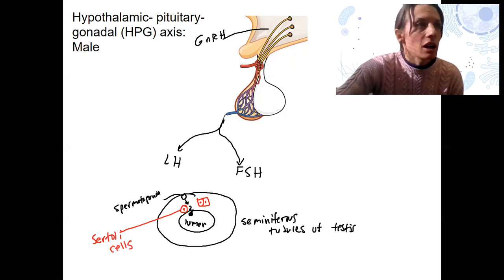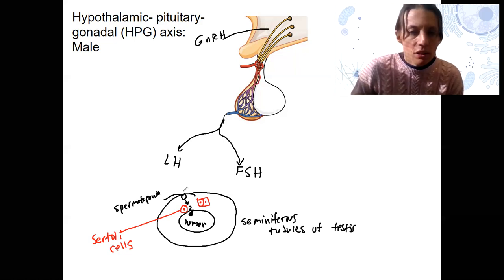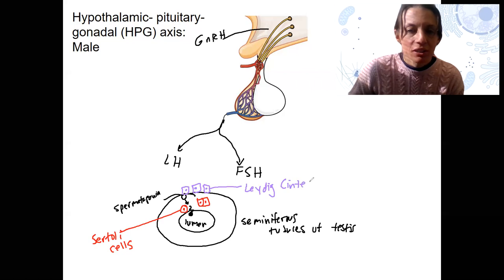I'm going to draw another type of cell that is present in the testes as well. These are located in the interstitial area outside of the seminiferous, surrounding the seminiferous tubules. So these are Leydig cells. These are also called interstitial endocrine cells, because that's what they are. They're in between the tissues and they're endocrine cells.